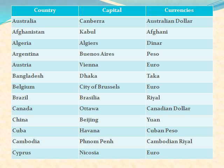Canada: its capital is Ottawa and currency is Canadian dollar. China: its capital is Beijing and currency is Yuan. Cuba: its capital is Havana and currency is Cuban Peso. Cambodia: its capital is Phnom Penh and currency is Cambodian Riel.